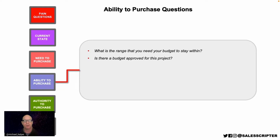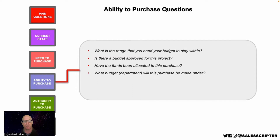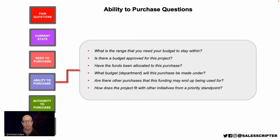'Is there a budget approved for this project?' In the B2B world, identify where the budget stands in terms of approval and whether funds are allocated to this purchase. Could another purchase swoop up those funds? 'What budget or department will this purchase be made under? Are there other purchases this funding may end up being used for? How does this project fit with other initiatives from a priority standpoint?' These questions help identify whether the money is there and how protected it is.